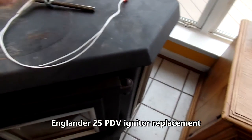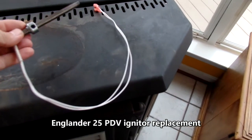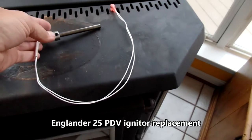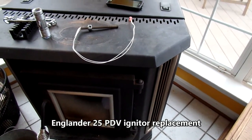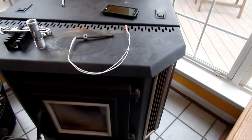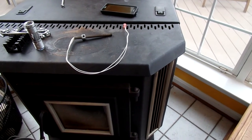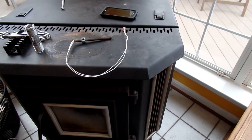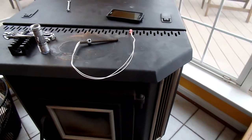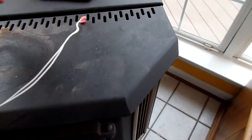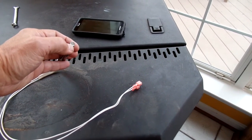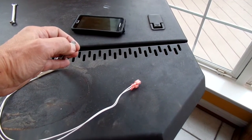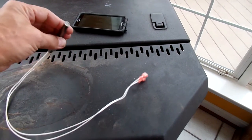Well, I've got to change my igniter on my Englander. This is my 25 PDV. It's the one that heats 2200 square feet. And this one is, I want to say now, it's probably about eight years old, but the igniter stopped working. It was having trouble working. I had to put the pellet right in, the wood pellet all the way in the hole for it to light. This is the new one.